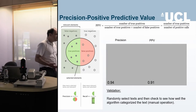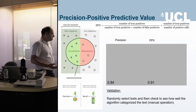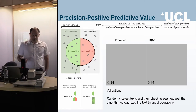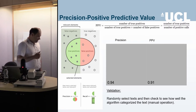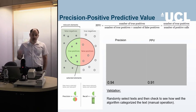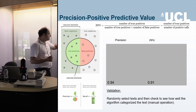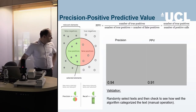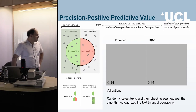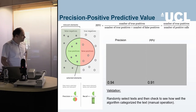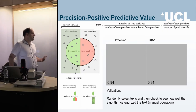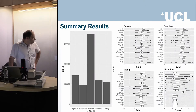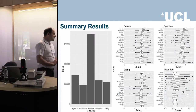With any information science approach, you want to apply validation. We randomly sampled the output to check how effectively the algorithm identified cultures, objects, and materiality. Precision and recall tests gave fairly good values — 0.94 and 0.91 for precision and PPV respectively — indicating this is a good approach for now, though it can be further trained in the future.